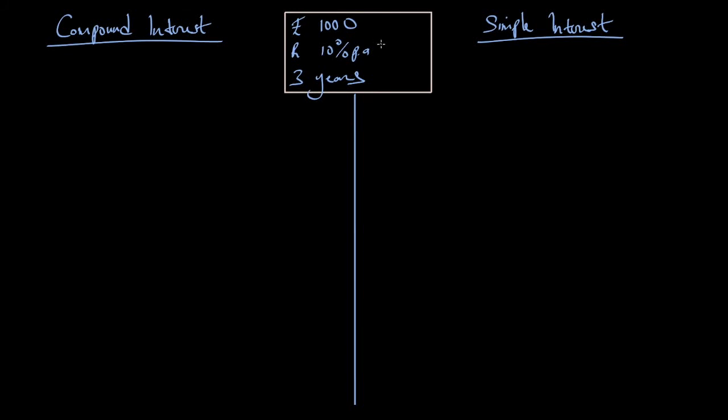If you cut the interest of 10% per 6 months, then you cut the interest per 6 months. In 3 years, you cut the interest of 10% per 6 months.